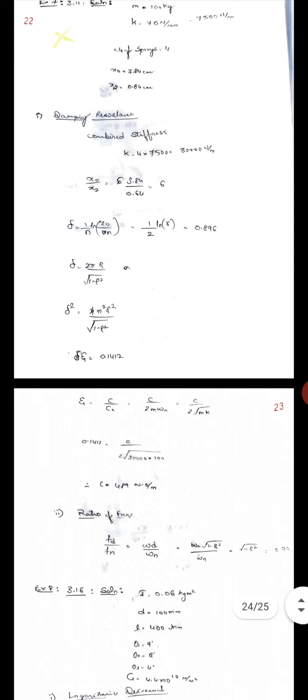The ratio of frequency fd by fn is omega d by omega n, which equals omega n square root of 1 minus zeta square upon omega n, or square root of 1 minus zeta square, which equals 0.99.